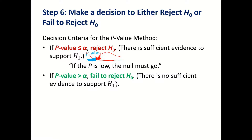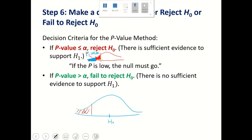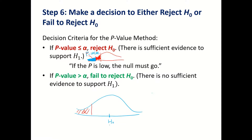If your p-value is greater than alpha, then we fail to reject the null hypothesis. In the middle is the null hypothesis region, and the critical region is in the tail. If your p-value is greater than alpha, that means your sample is not very extreme — it's not significantly lower than the null hypothesis. So there's not enough evidence to reject the null hypothesis, and we fail to reject it.